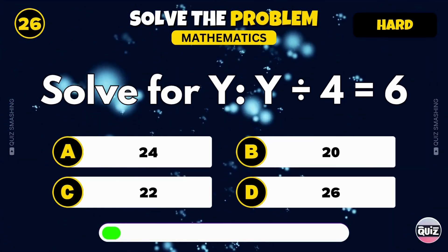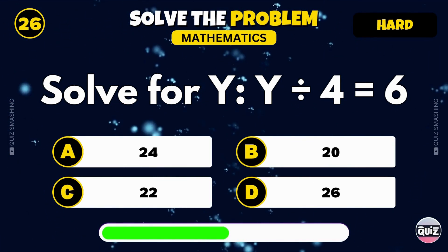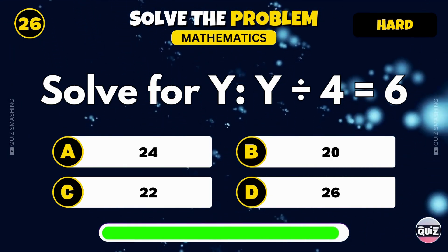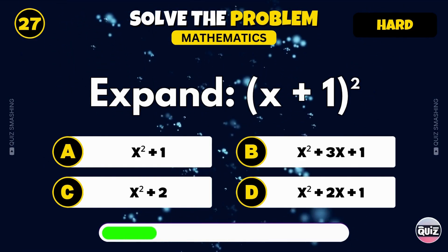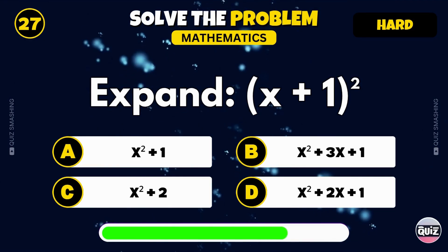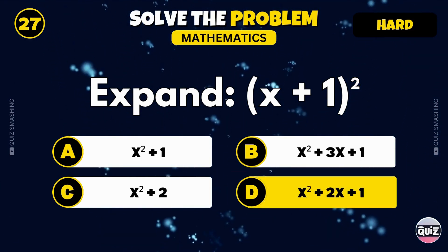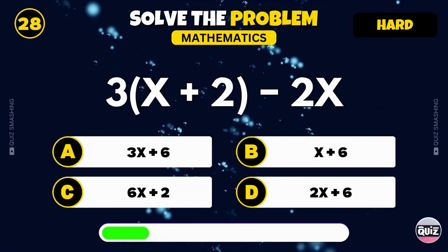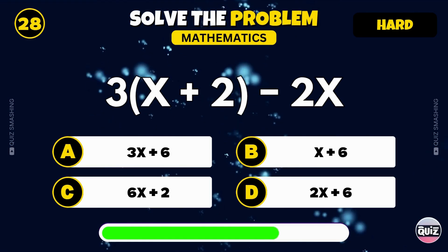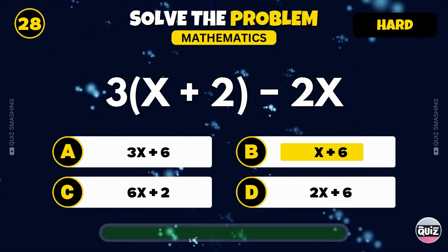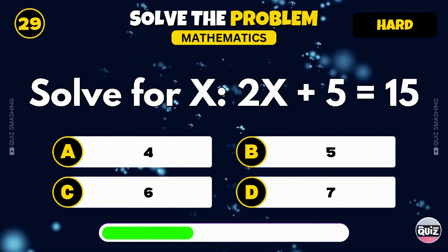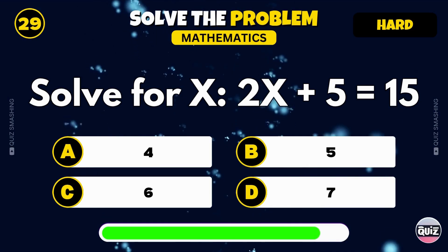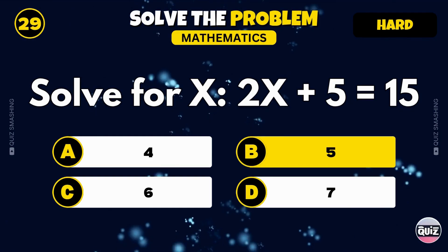Solve for y: y divided by 4 equals 6. The answer is 24. Expand the expression open bracket x plus 1 close bracket squared. That's x squared plus 2x plus 1. Simplify 3 times open bracket x plus 2 close bracket minus 2x. That becomes x plus 6. Solve for x: 2x plus 5 equals 15. Great job, x equals 5.